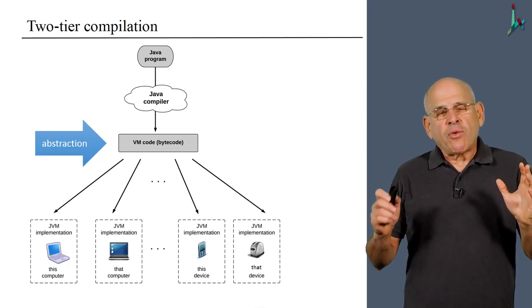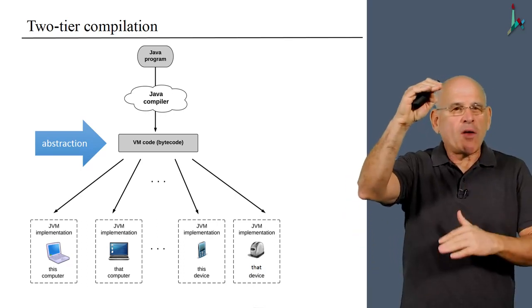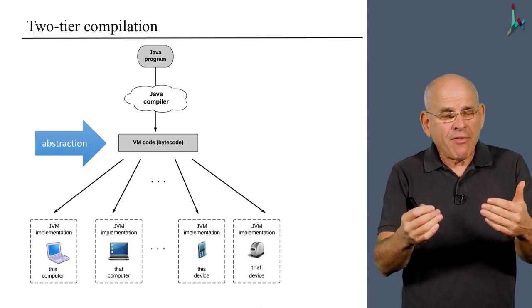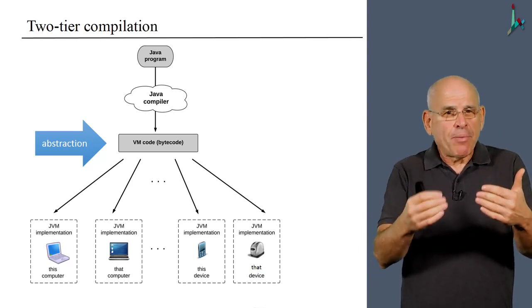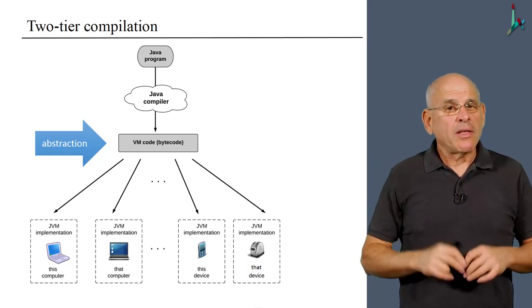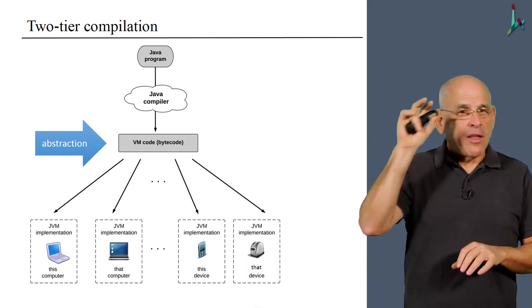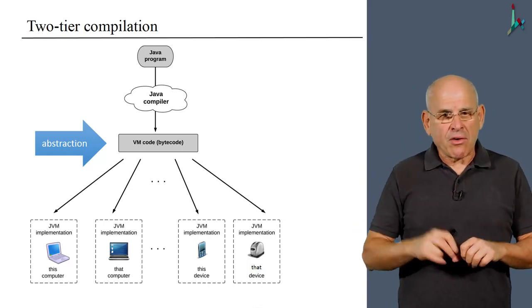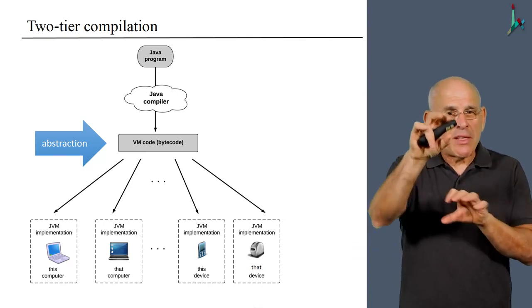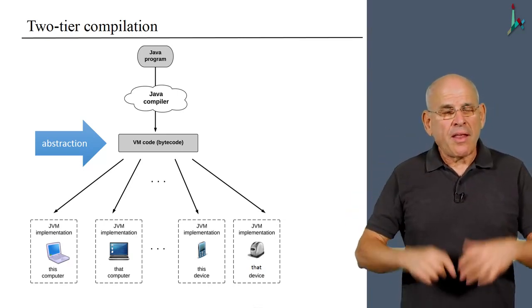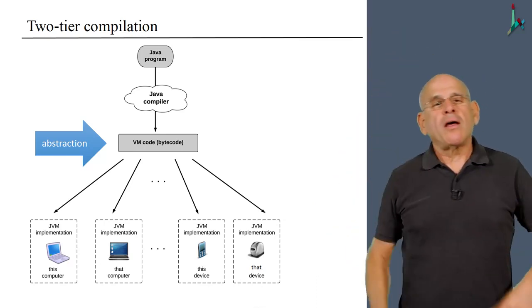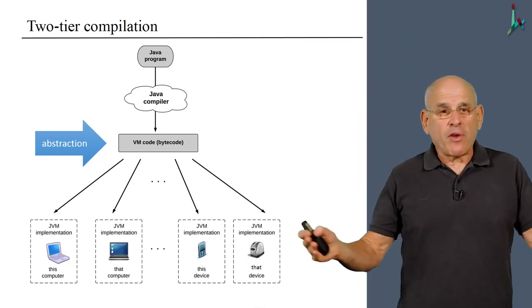We need such a translator for every platform on which we want to execute our VM program. You see, the translation gap between the high level and the low level is huge. By introducing an intermediate level, we are decoupling this very complex process into two separate standalone sub-processes: the compiler and the VM translator or the VM implementation. Every one of these translators is significantly simpler than the compiler that goes all the way from top to bottom, like, for example, C++.